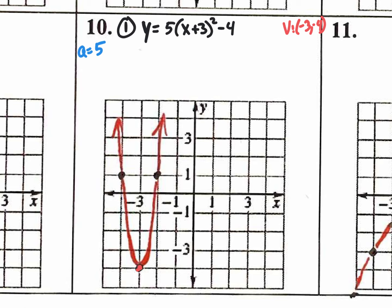Moving on to number two: the second thing they asked for is to state the axis of symmetry. That's the vertical line crossing right through the x value of the vertex: x equals negative three. Nice and simple.